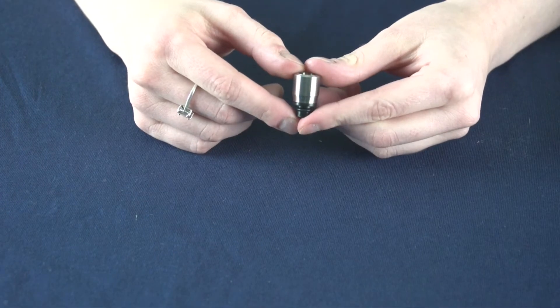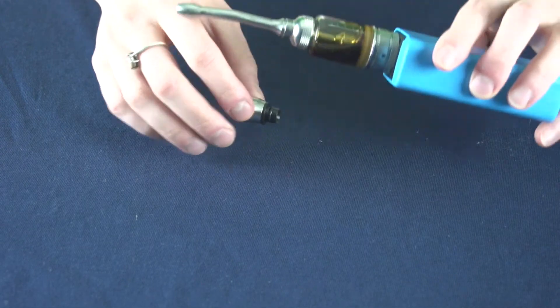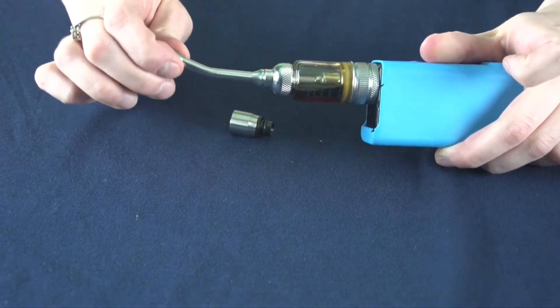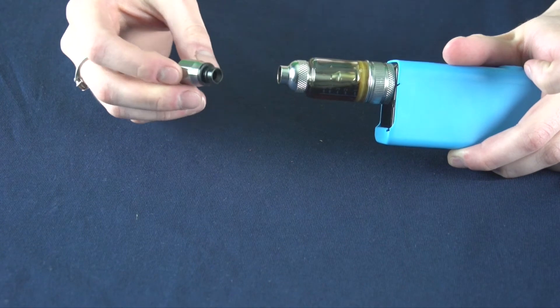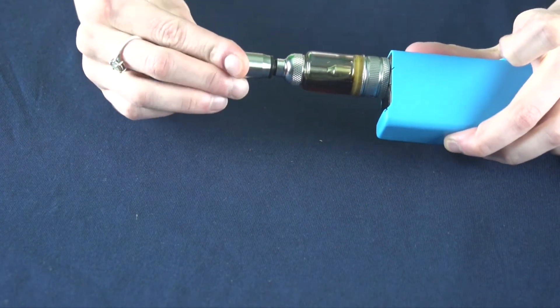To install this drip tip just take your tank, remove your old drip tip, take your new one and slip it in right where the old one went.